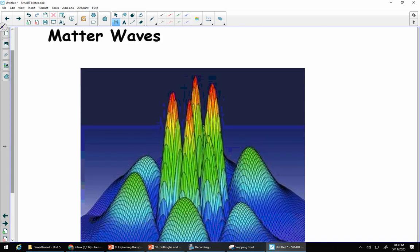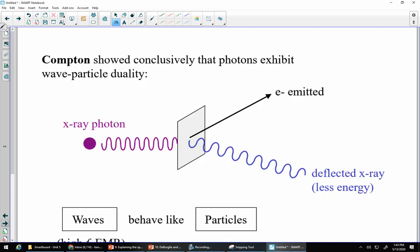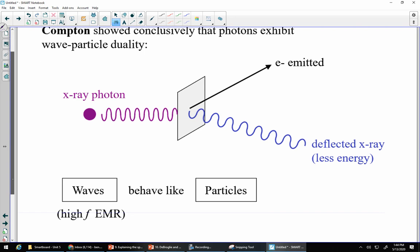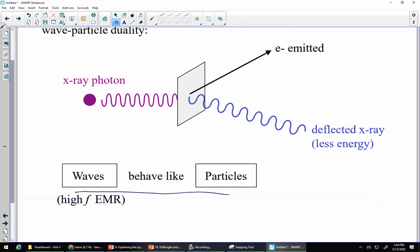First thing we're going to talk about is matter waves. It sounds like a bit of a left-hand turn, but it's going to help us explain the quantum mechanical model of the atom, or the Schrödinger model of the atom.